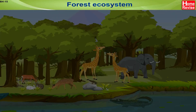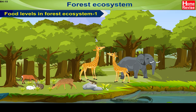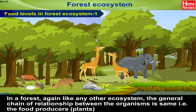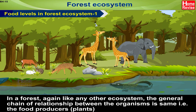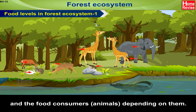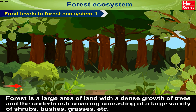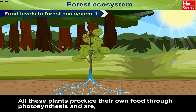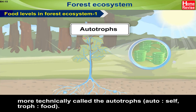Forest Ecosystem — Food Levels in the Forest Ecosystem: In a forest, like any other ecosystem, the general chain of relationship between organisms is the same — food producers (plants) and food consumers (animals) depending on them. A forest is a large area of land with a dense growth of trees and underbrush, consisting of shrubs, bushes, grasses, etc. All these plants produce their own food through photosynthesis and are therefore categorised as self-food producers, more technically called autotrophs.